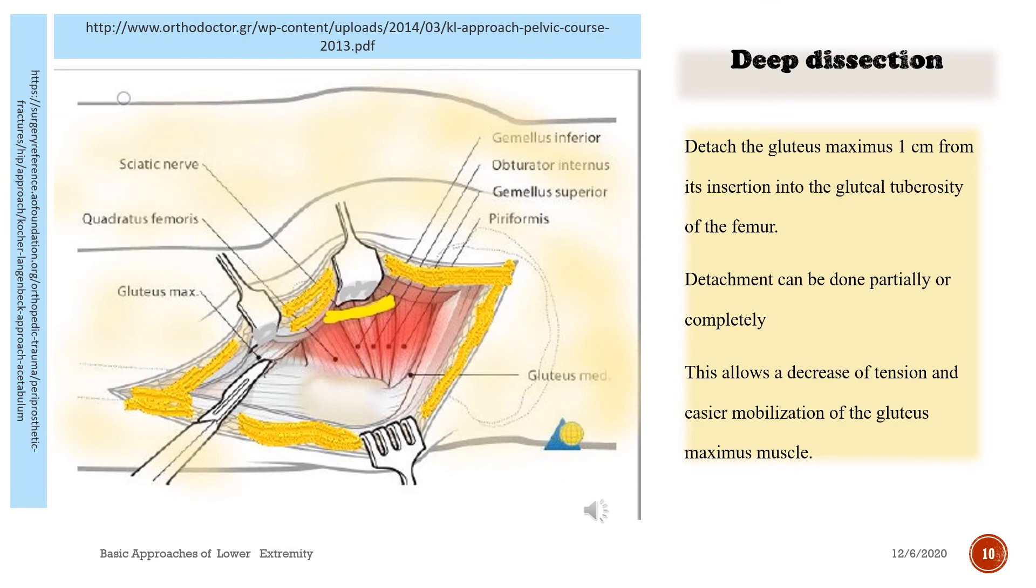Detach the gluteus maximus one centimeter from its insertion into the gluteal tuberosity of the femur. Detachment can be done partially or completely. This allows a decrease of tension and easier mobilization of the gluteus maximus muscle.